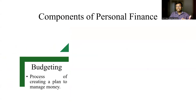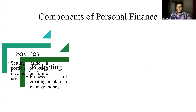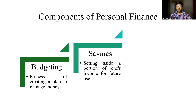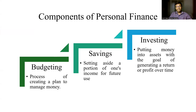There are three major components which fall under personal finance. The first is budgeting, which deals with the process of creating a plan to ensure that we are able to effectively manage the money that we are earning in accordance with our income. The second component is savings, which deals with setting aside sufficient amount of income for one's personal use in the future. Finally, the last component is investing, where we deal with putting money aside with the goal to generate sufficient amount of return or profit over time.